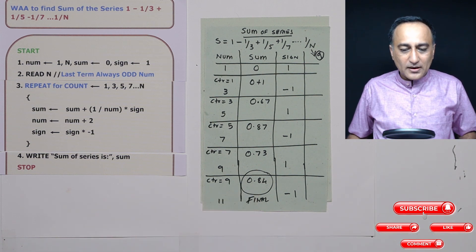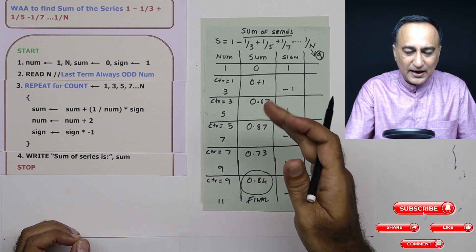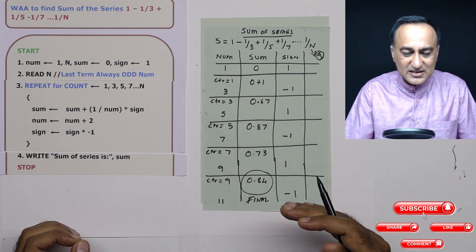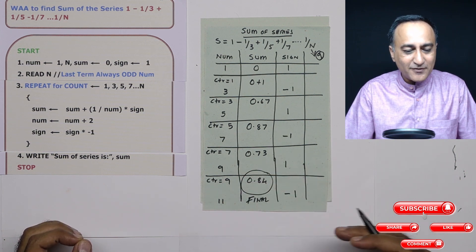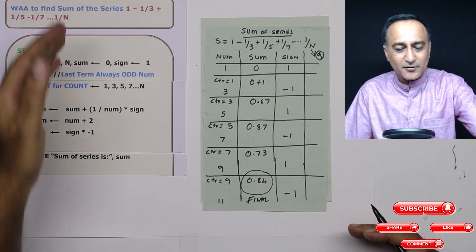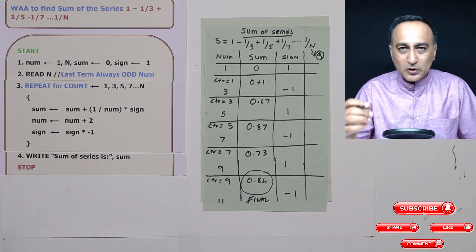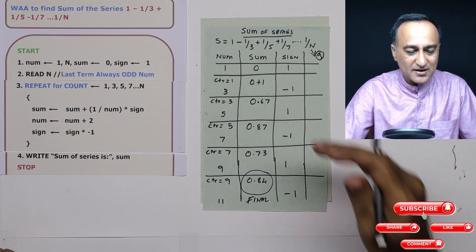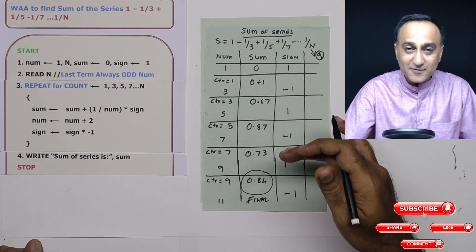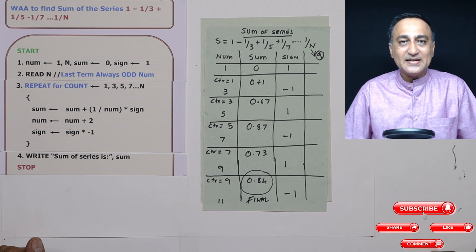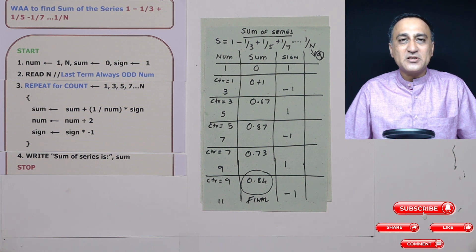I request that all of you build a table similar to this for every algorithm — run through the logic, as it is the easiest and most accurate way to verify correctness. Try a larger value like n = 13 or 15 to deepen your understanding. The important concept here is why sign is used: because we are adding, subtracting, adding, subtracting alternately, sign flips like a flag. Such problems are very frequently asked in campus placement exams.